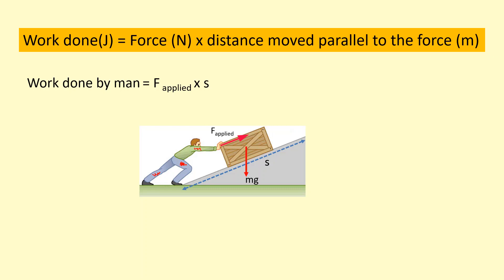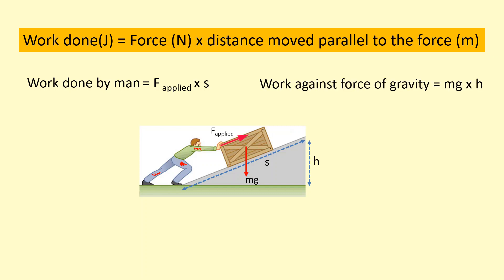Another force acting on the box is the weight, and the distance parallel to that is the height. So we can say the work done against the force of gravity is mg times H, the height. That's just another way of saying gravitational potential energy. So the work done pushing against the weight is gained as the gravitational potential energy by the box.